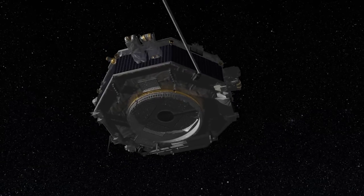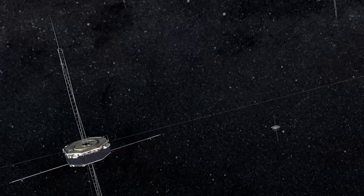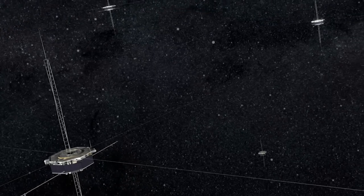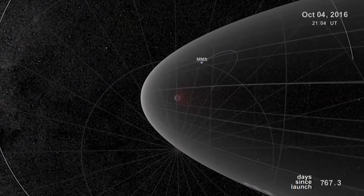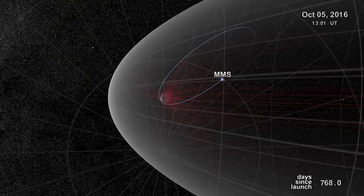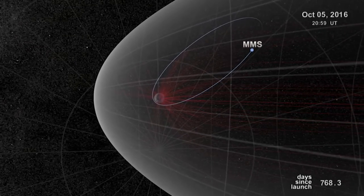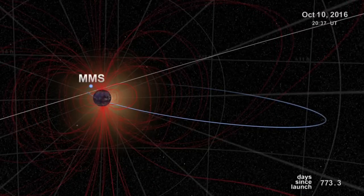After months of testing, the quartet of MMS satellites will be ready to go to work. Once they're commissioned after that six-month time frame, they formation fly in a tetrahedron formation and they'll go around the Earth to pick up this reconnection event that we find on both sides of the Earth where the Sun's magnetic field and the Earth's magnetic field meet on the Sun side and then on the tail side of the magneto tail of the Earth on the dark side.